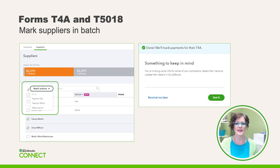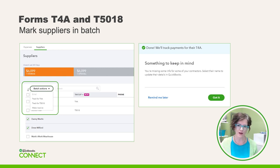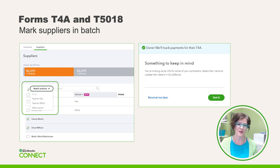Next, it's time to mark our suppliers in a batch using the Batch Actions drop-down menu. There's no need to open each supplier individually unless you know their profile isn't complete. If you're missing information, don't worry — QBO will remind you later when we start preparing the actual tax slips.